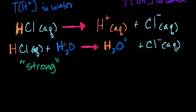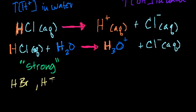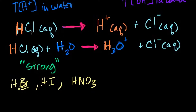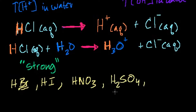Strong isn't just a nice word — it literally means completely dissociating in water; it's a one-way reaction. The strong acids are hydrochloric acid, hydrogen bromide, hydrogen iodide, nitric acid, sulfuric acid, and perchloric acid. When you put any of these in water, the little H pops off, joins another water molecule to form hydronium, and whatever's left over — in the case of the halogens — forms a negative ion.